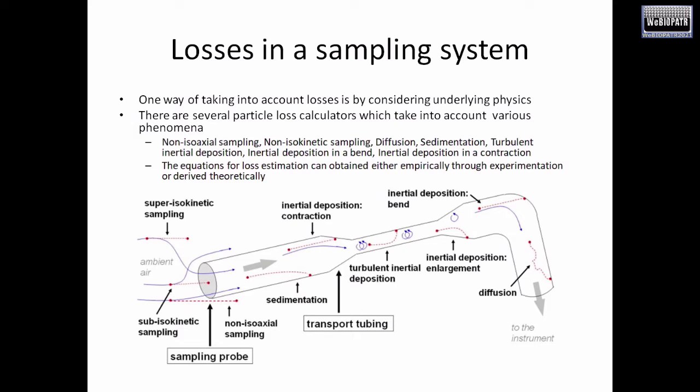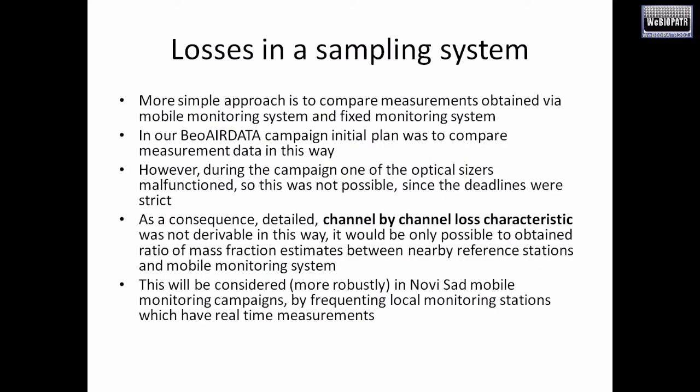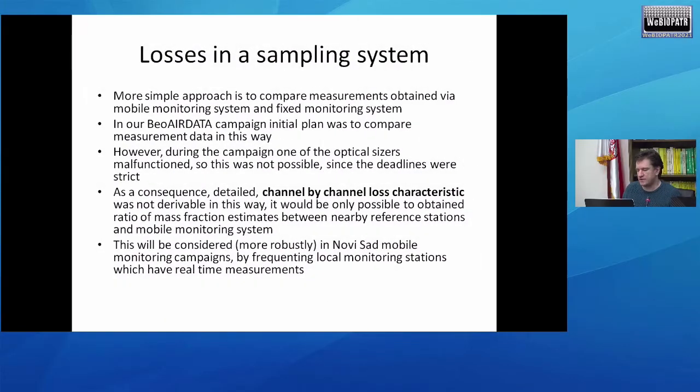One way to account for these losses is by considering the underlying physics, though that is difficult as a large number of phenomena can enter into the loss physics. Ideally you would want to use software that already has all these losses integrated so you can specify the geometry of your sampling system. Another, simpler approach is to compare measurements obtained via the mobile monitoring system to a fixed monitoring system. We initially planned to do this for our Belgrade campaign, but one of the optical particle sizers malfunctioned, so we couldn't derive channel-by-channel loss characteristics as we had wanted.